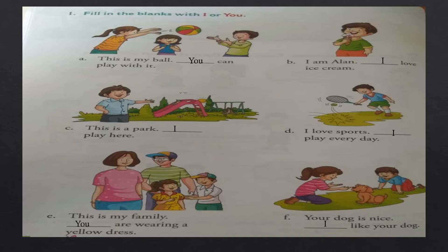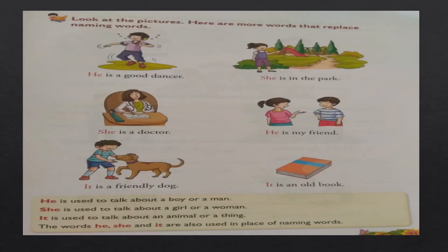Page number 23. Look at the pictures. Here are some more words that replace naming words. He is a good dancer. She is in the park. She is a doctor. He is my friend. It is a friendly dog. It is an old book. He is used to talk about a boy or a man. She is used to talk about a girl or a woman. It is used to talk about an animal or a thing.